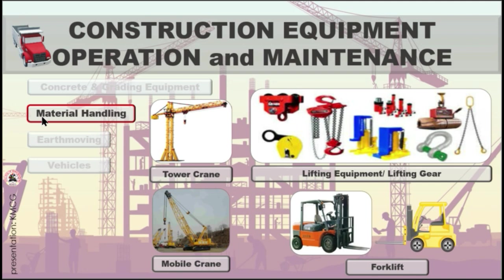We have material handling equipment such as the power crane, lifting equipment or lifting gears, the forklift, and the mobile crane. A crane is a type of machine generally equipped with a hoist, wire ropes or chains, and sheaves — groove pulley wheels for changing direction of a wire rope — that can be used to both lift and lower materials and to move them horizontally.